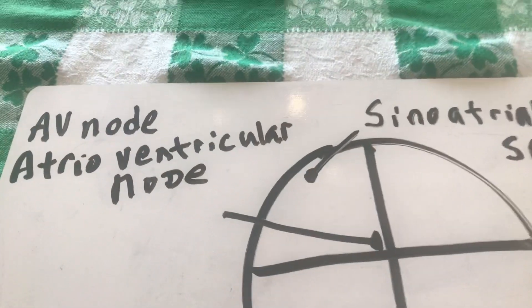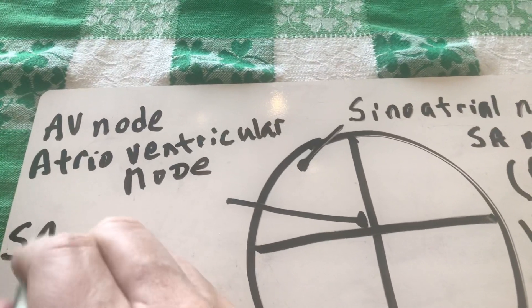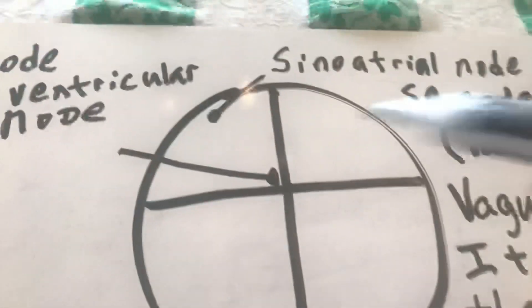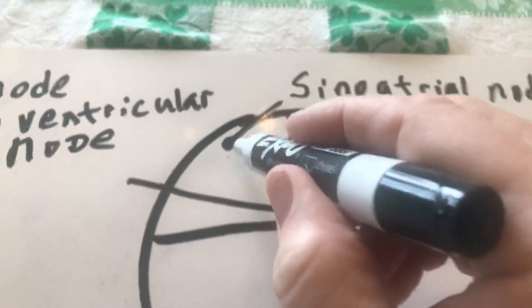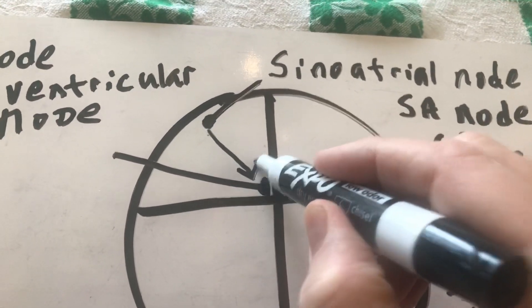So what's going to happen now is the SA node is going to cause my atria to beat, but the SA node is also going to send a signal to the AV node.